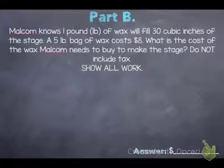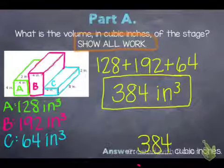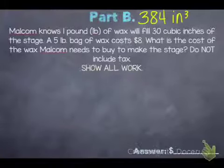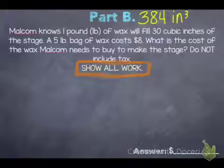Now onto part B. We'll use data from part A, so the 384 cubic inches. The problem says Malcolm knows 1 pound of wax will fill 30 cubic inches of the stage. A 5 pound bag of wax costs $8. We need to figure out the cost of the wax Malcolm needs to buy to make the stage, not including tax. Again, super important on I-Step and Acuity: they want us to show all our work.